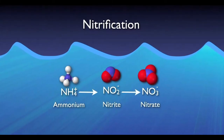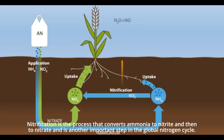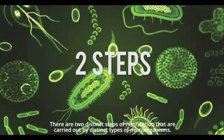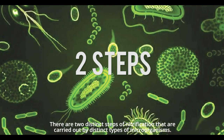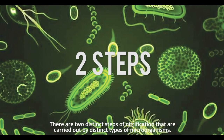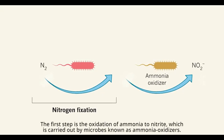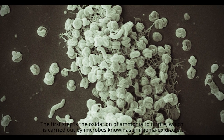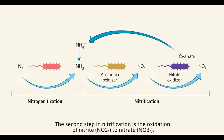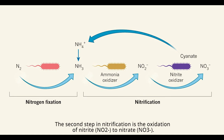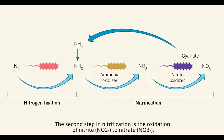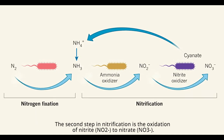Next comes nitrification. Nitrification is the process that converts ammonia to nitrite and then to nitrate, and is another important step in the global nitrogen cycle. There are two distinct steps carried out by distinct types of microorganisms. The first step is the oxidation of ammonia to nitrite, carried out by microbes known as ammonia oxidizers. The second step is the oxidation of nitrite, NO2 negative, to nitrate, NO3 negative.